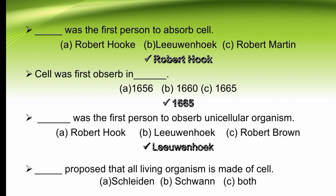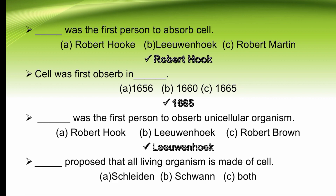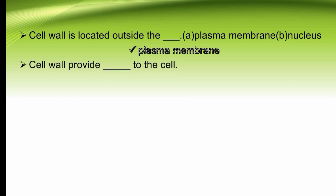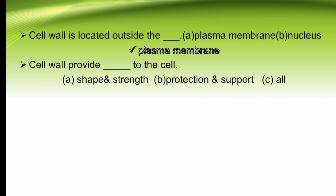Dash proposed that all living organisms are made of cells — Schleiden, Schwann, or both. The right option is both. Cell wall is located outside the plasma membrane. Cell wall is located outside the plasma membrane — the right option is plasma membrane. Cell wall provides dash to the cell — shape and strength, protection and support, or all. Cell wall provides shape, strength, protection, and support to the cell. So the right option is all.